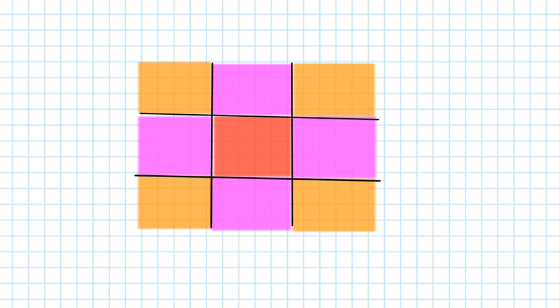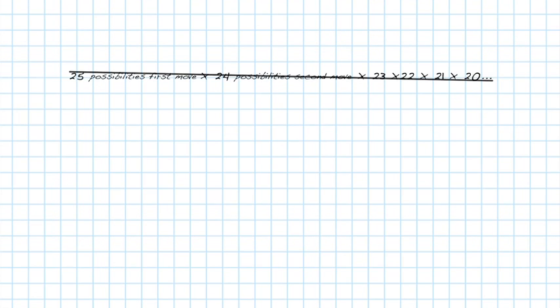So instead of saying there are 25 possibilities for the first move and then 24 for the second and so on and so on, we see it's much smaller. It starts with six, not 25.